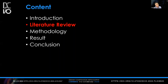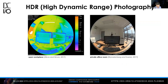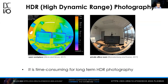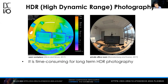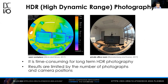For the specific literature review, HDR — high dynamic range photography — has been widely used to capture pixel information from the real world and study the luminance distribution in 3D space, like open workplace and private office rooms. However, it's time-consuming for long-term HDR photography, and results are limited by the number of photographs and the camera positions.